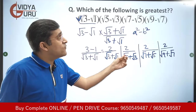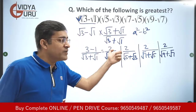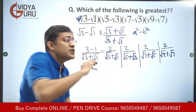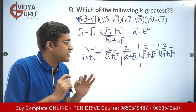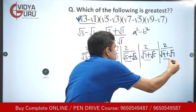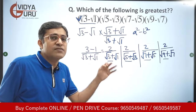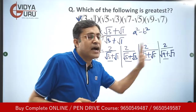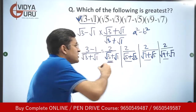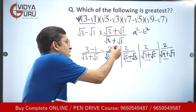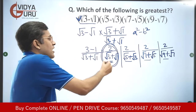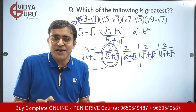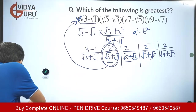Now observe: all four terms have the same numerator, 2. These are fractions, so when the numerator is the same, the greatest fraction is the one with the smallest denominator. The smallest denominator is (√3 + √1), since 3 and 1 are the smallest numbers. Therefore, (√3 − √1) is the greatest term. That is the answer.